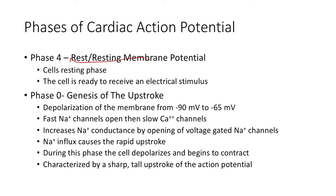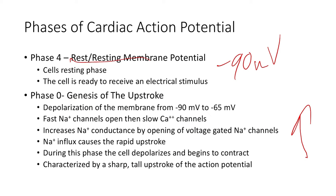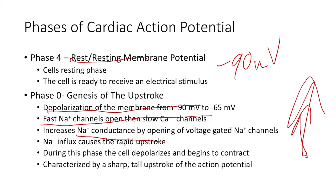Phase four is the resting membrane potential. The cells are in a resting phase, back at negative 90 millivolts, and basically ready to receive the electrical stimulus. Phase zero is the genesis of the upstroke — once we get up to negative 65 millivolts, we have that influx. Depolarization goes from negative 90 to negative 65; the cells become less negative because we have an influx of sodium ions. The fast sodium channels open, then the slow calcium channels open, increasing sodium conductance and causing that rapid uptick — the upstroke. The cell begins to depolarize and eventually begins to contract.